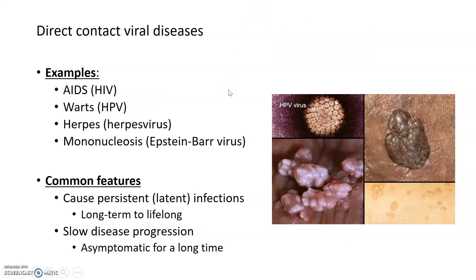Some common features of direct contact viral diseases — diseases caused by direct contact between one host and another — are that they tend to cause persistent or long-term infections that are usually latent, hiding within the host. These infections can be very long-term, sometimes lasting the entirety of the host's life. As such, diseases caused by direct contact viruses tend to progress relatively slowly and remain asymptomatic for a long time.